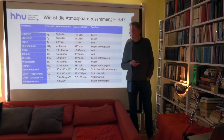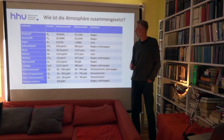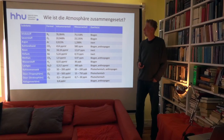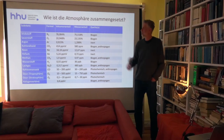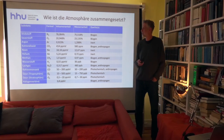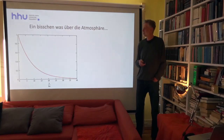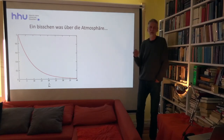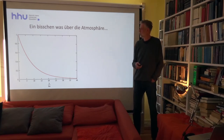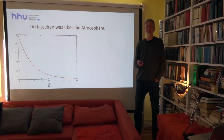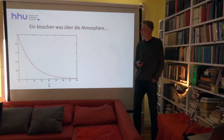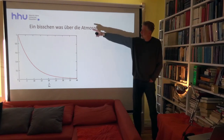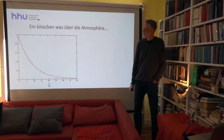Wenn die Konzentration von Treibhausgasen zunimmt, verschiebt sich die Schicht mit einer gewissen Temperatur immer weiter nach oben, und wir fangen immer mehr Wärme in der Erdatmosphäre ein. Die mittlere Temperatur steigt, weil die Rückstrahlung zur Erdoberfläche zunimmt. Wir haben 78 Prozent Stickstoff und 21 Prozent Sauerstoff in der Atmosphäre. Der Luftdruck nimmt nach oben exponentiell ab – das beschreibt die barometrische Höhenformel.